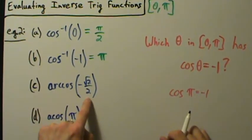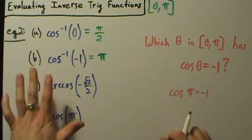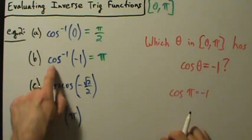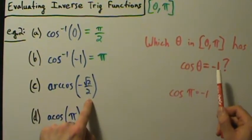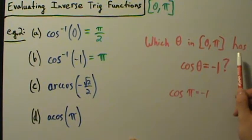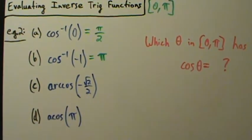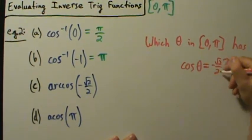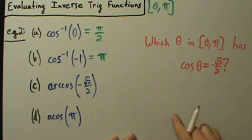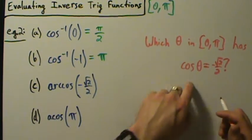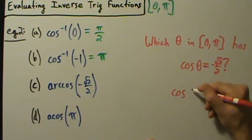Next: the inverse cosine of negative root 2 over 2 — written here as arc cos, which is just another notation for inverse cosine. We ask: which theta in 0 to pi has cosine of theta equal to negative root 2 over 2? That's a nice special number on the unit circle, and the only number in this interval with that cosine value is 3 pi over 4.